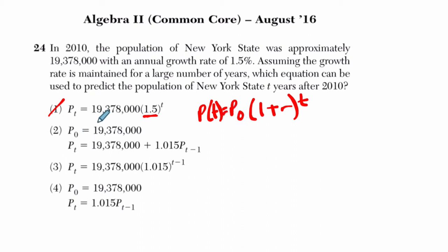So it's an initial population, which we see here. That's correct. 1 plus the growth rate, so it should be about 1.015. And I can see that number here and here and here. So 1 is out.